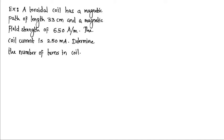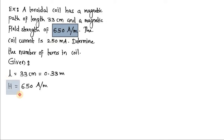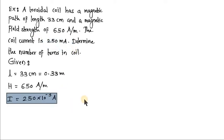Determine the number of turns in the coil. Let's write down the given values: Length of the magnetic path l = 0.33 meters. Magnetic field strength H = 650 ampere per meter. The current flowing through this coil is 250 milliampere, which equals 250 × 10^-3 ampere.